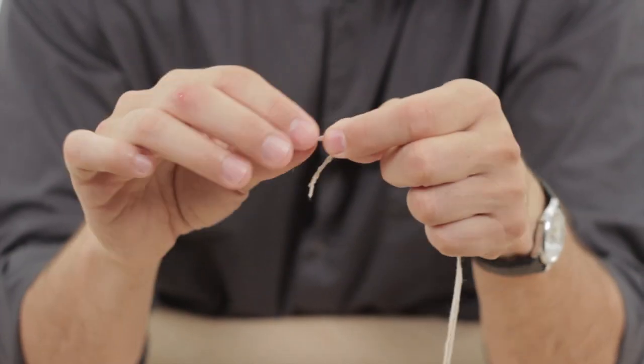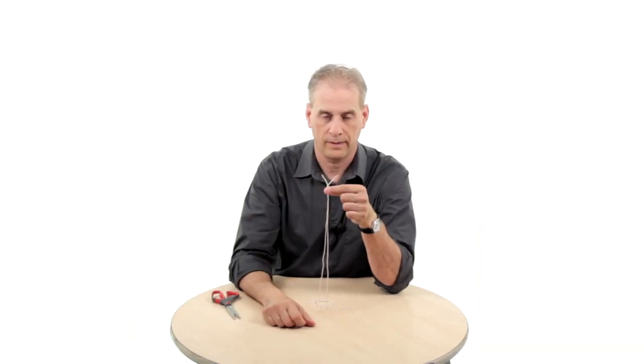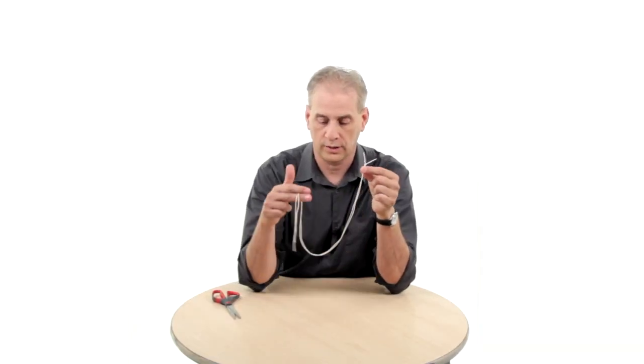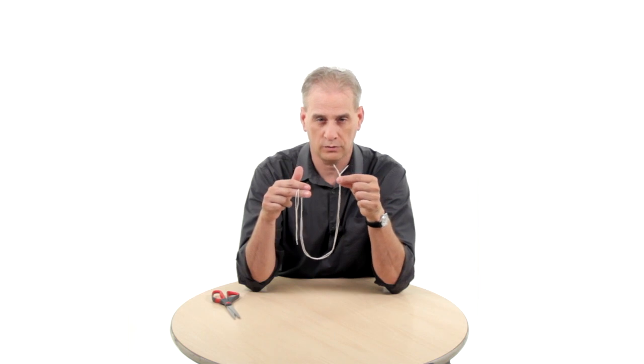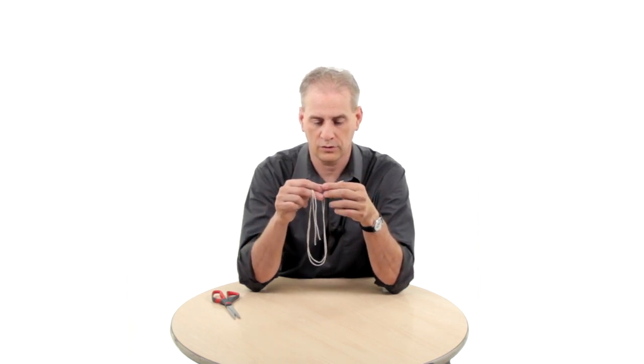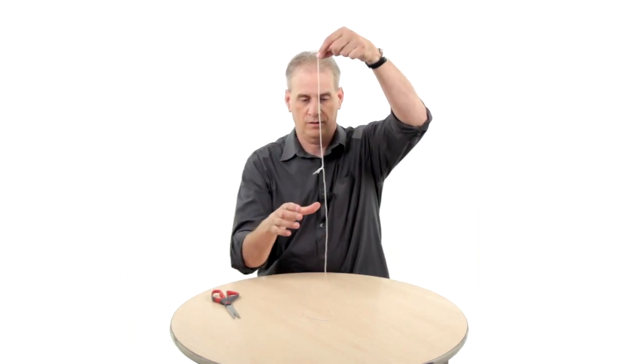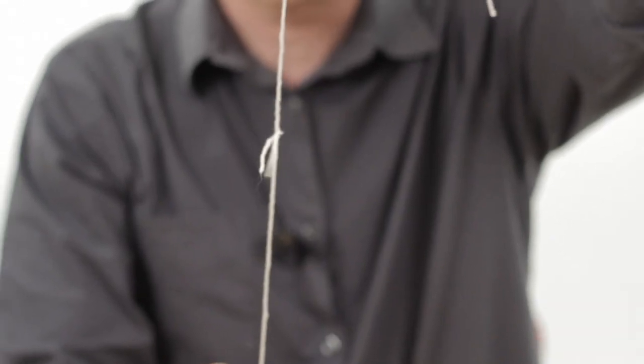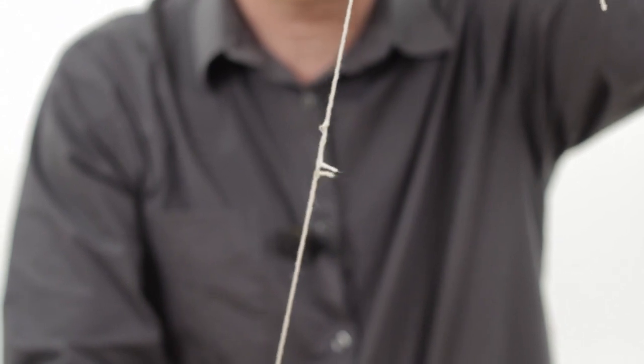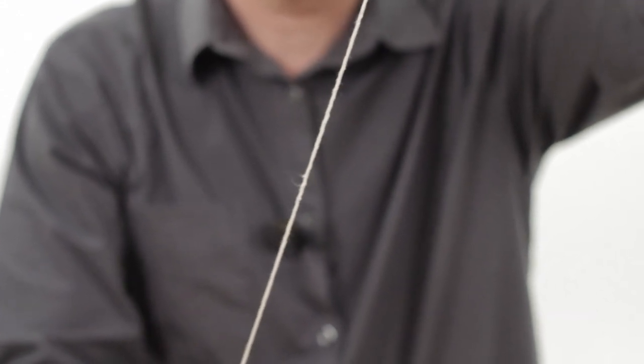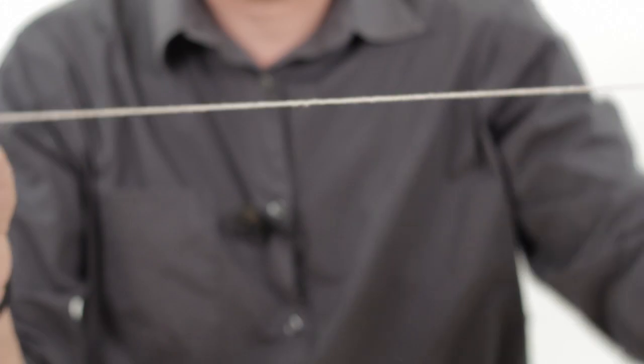Look at that. That looks like two strings. But it's really one string because this is the center of the string, the twine, that I've separated out to make it look like two. If I were to pull that, it goes right back together again. And you can hand that out to be examined.